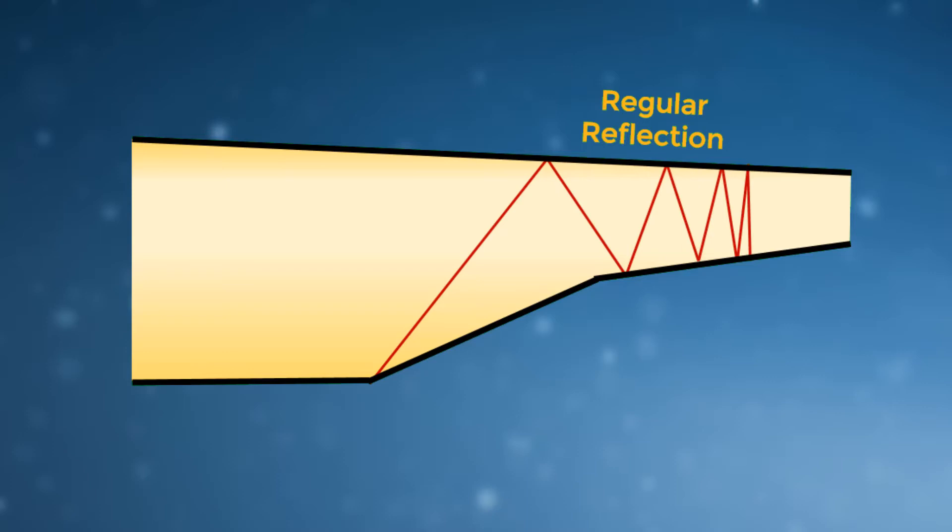This is called a regular reflection, and the geometry is referred to as a supersonic diffuser, since the shocks slow down the flow and increase its pressure.